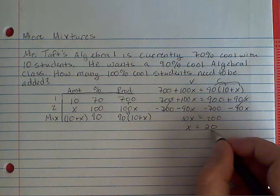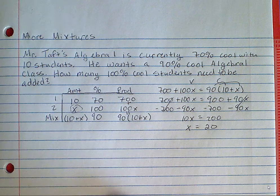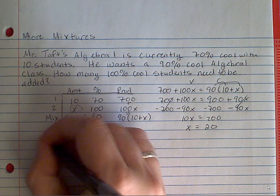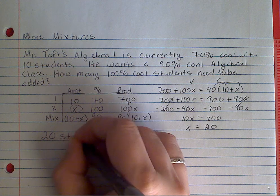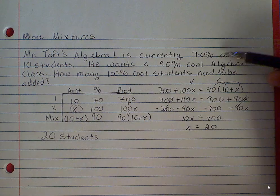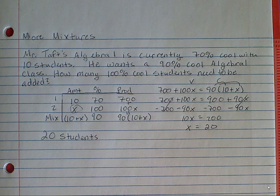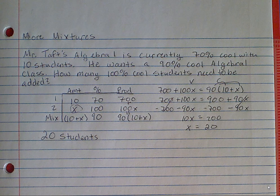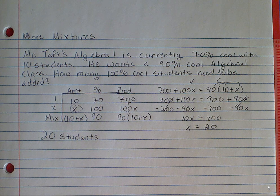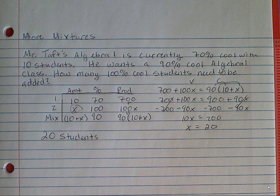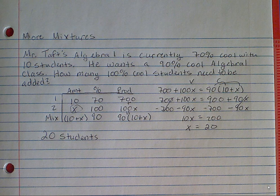This isn't 20% — this is a number of students I need to add because it's a word problem. It's 20 students. So in order to make this Algebra 1 class 90% cool, I need to add 20 100%-cool students to it. We'll have 30 students total. Since it's a word problem, you do need to have the label.